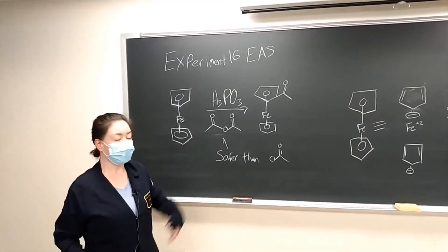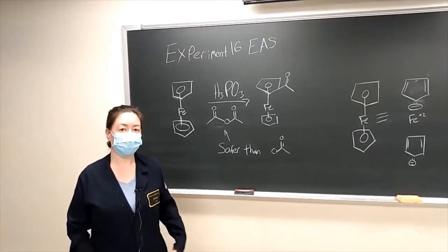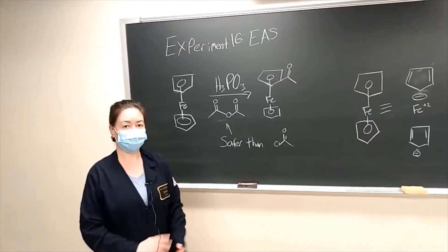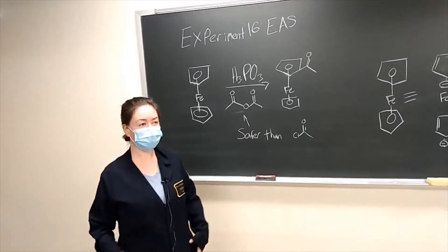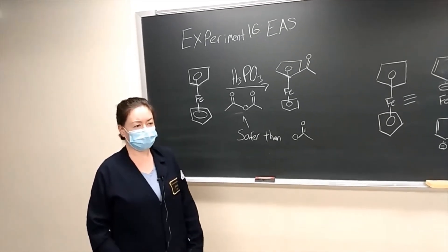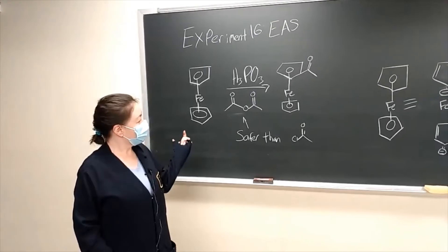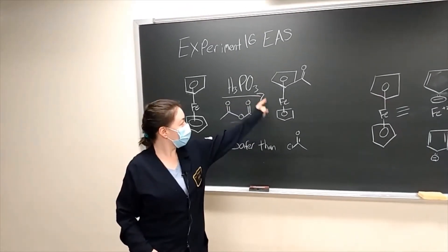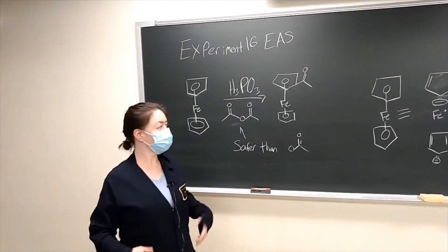We're using acetic anhydride because it's safer to handle than acetyl chloride, which is more common when you see in textbooks. We're going to be targeting to make this target acylation product where we add one acyl group to it.